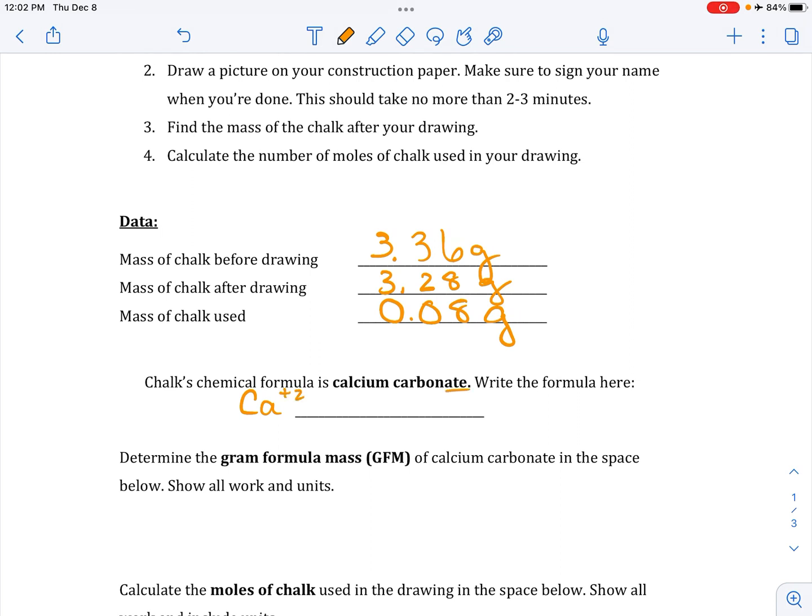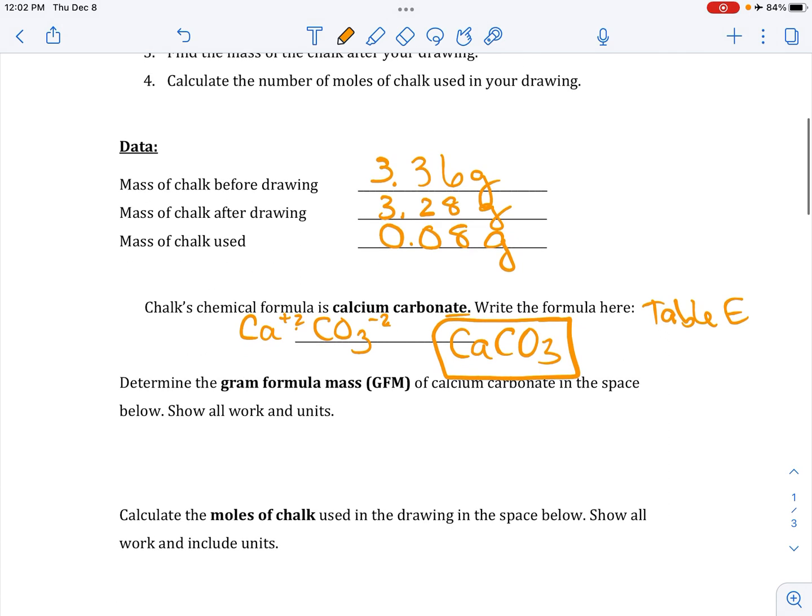Carbonate, seeing as it ends with ATE, that tells me it's a polyatomic ion from table E. CO3 with a minus 2 charge. Noting that plus 2 and minus 2 cancel out, my final formula is just CaCO3. No parentheses, no crisscross. We're all set.